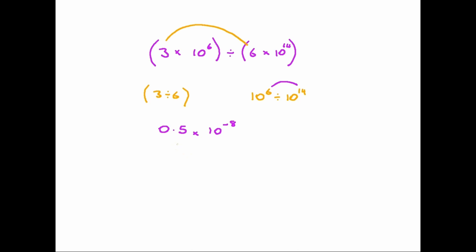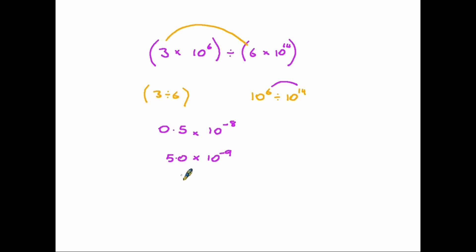Once again the answer is not in standard form — zero point five is not between one and ten. This time we need to multiply by ten, so zero point five becomes five. That means we have to change the power of ten by dividing it by ten, so it becomes ten to the power minus nine. Remember: if we multiply the first half by ten we must divide the second half by ten to keep things equal.